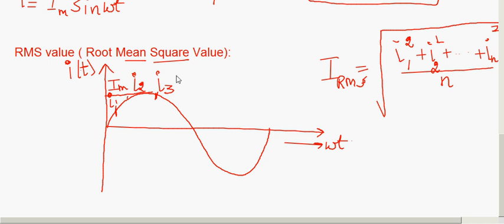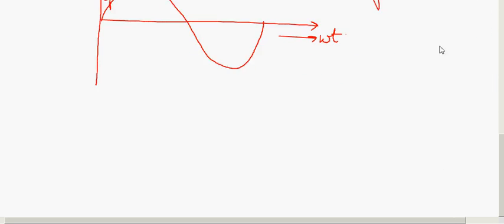The effective value or root mean square value is that direct current which would produce the same power dissipation in a resistive load. So the RMS value is measured in terms of the power dissipated in the cycle. First I will give you the definition, then I'll tell you how to calculate the root mean square value if you know the peak value of the alternating current.